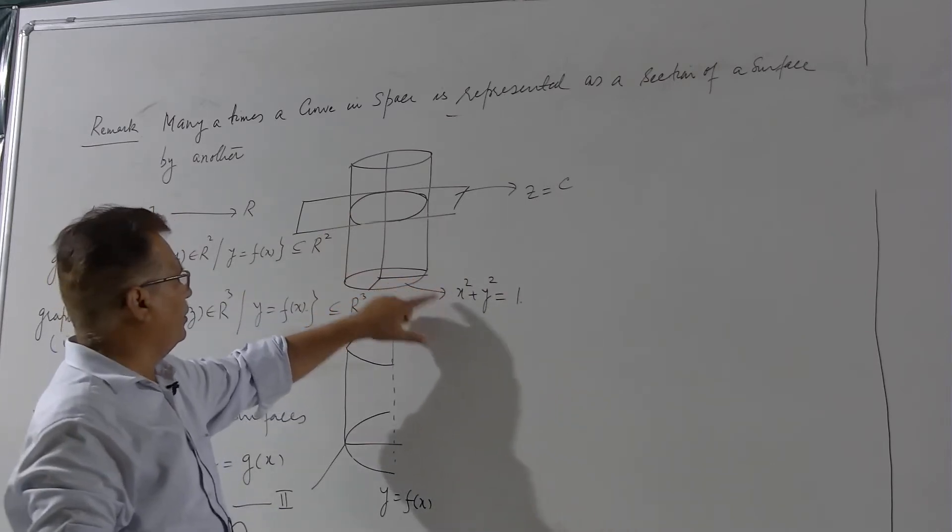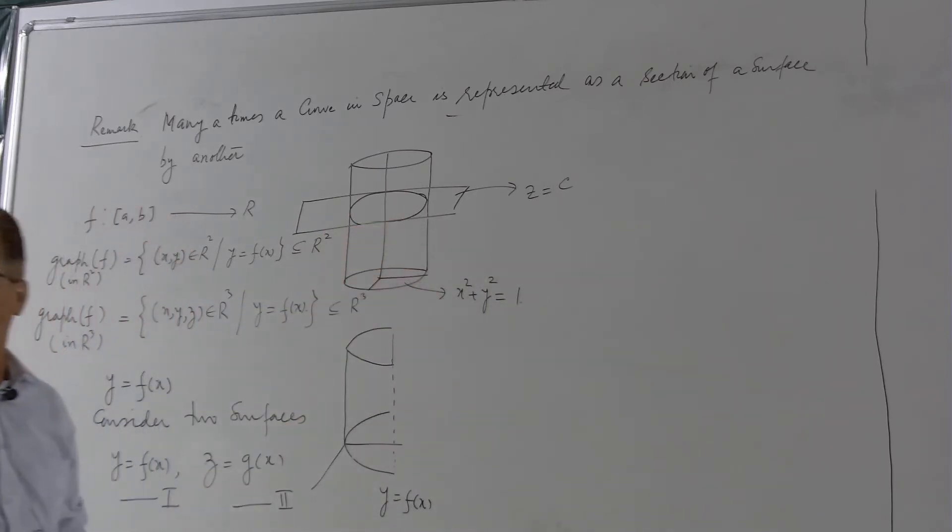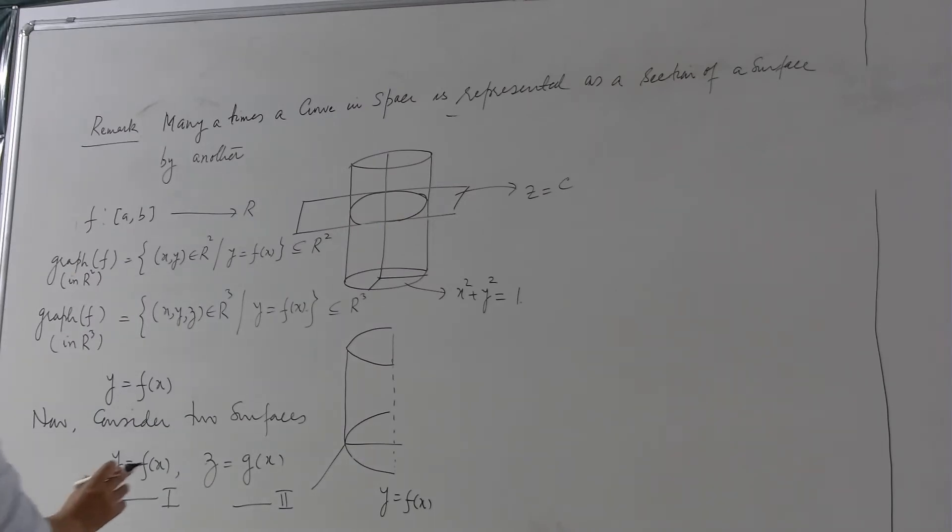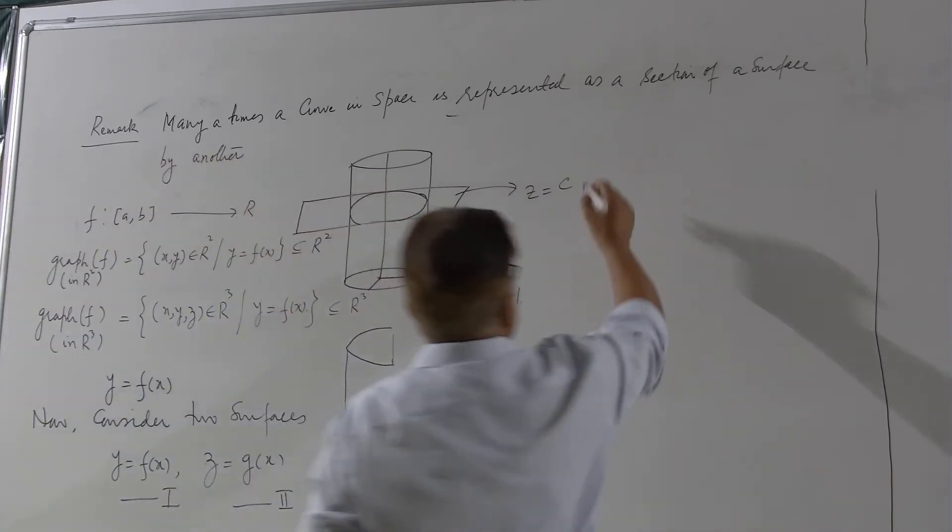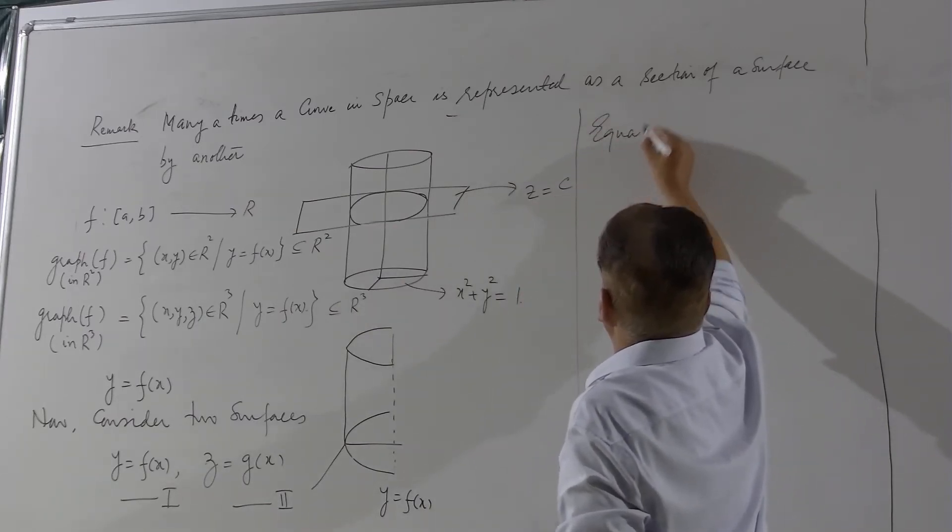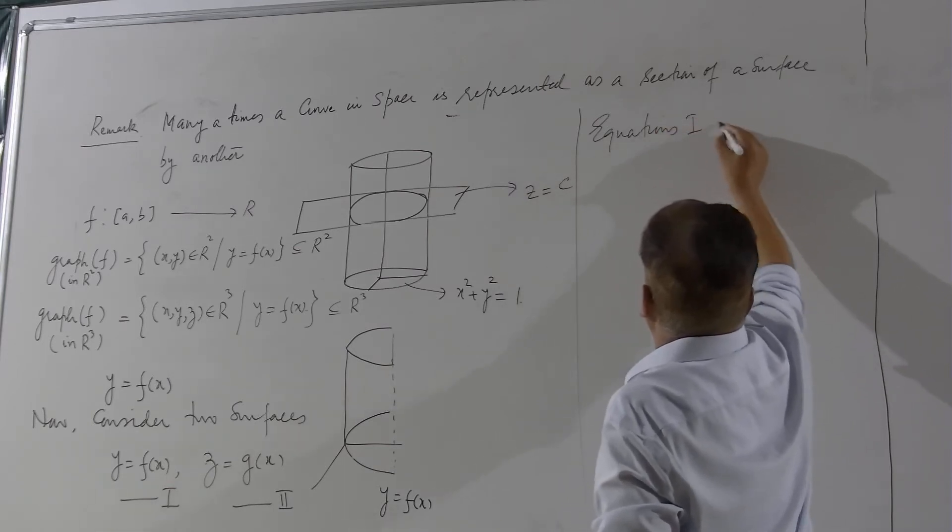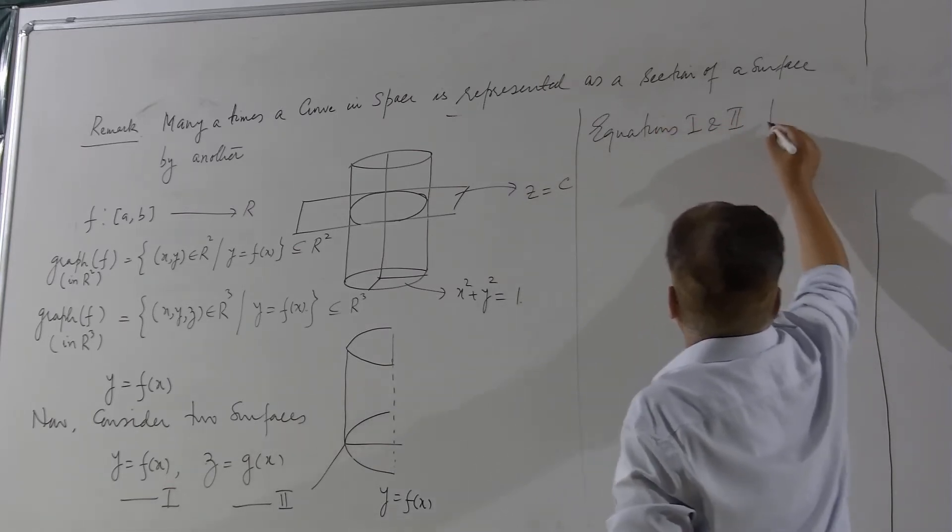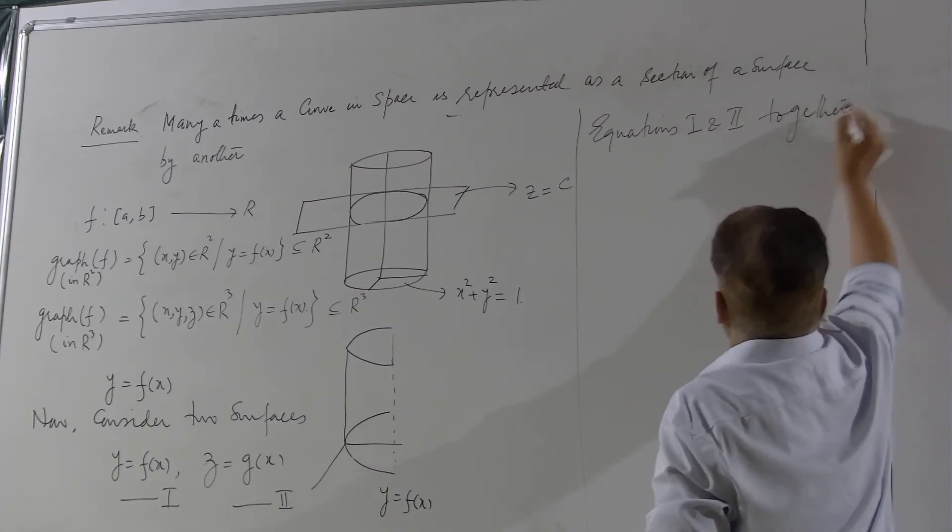Now when you take these two equations together means I am considering the common part between these two surfaces. The common part between these two surfaces will in fact be a circle. In general if you take two surfaces y = f(x) and z = g(x) and then think of their common part, their common part must be a curve and that curve lies necessarily in the space. So equations one and two together represent a space curve.